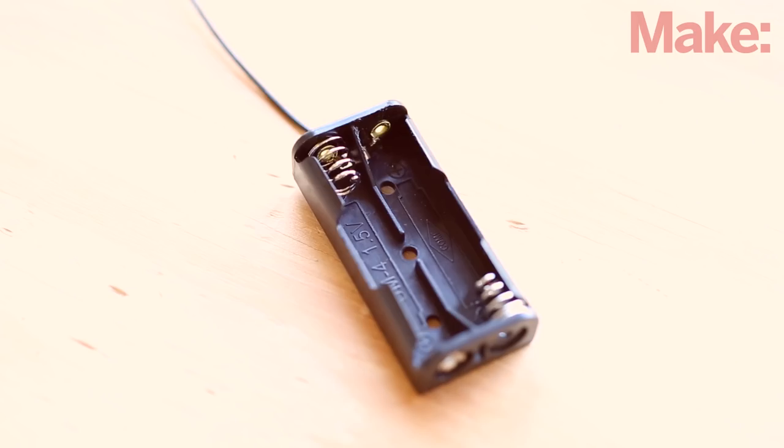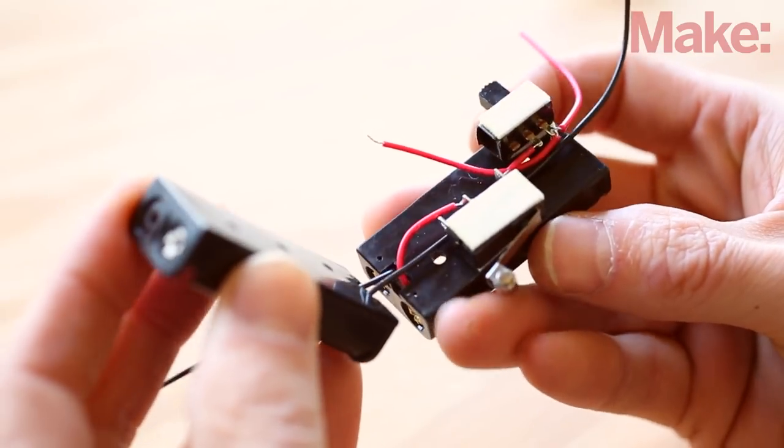Then, cut the red lead off the other battery pack at the point where it connects to the terminal inside the battery holder. Now, we can finish up building the body of our robot.